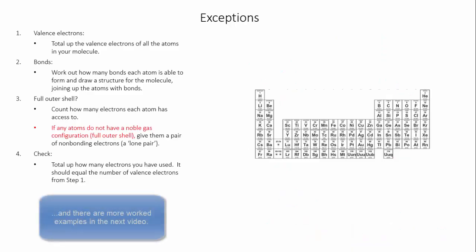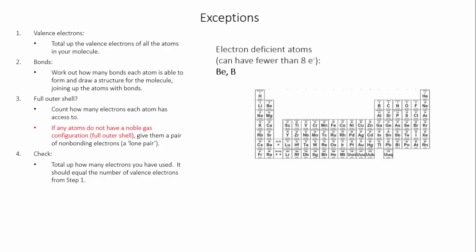Now I need to tell you about some exceptions. The exceptions refer to the part where you're checking whether all of your atoms have a noble gas configuration. The first exception is if you have a structure with beryllium or boron—these are electron deficient atoms, which means they don't have to have a full octet. They don't need eight electrons in their outer shell.